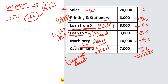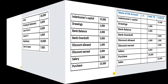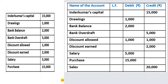So it should now be clear which entries go on the debit side and which go on the credit side. Just remember what are expenses and what are assets. If you understand this concept, you can easily answer questions in the examination. No need to cram — just focus on the concept.